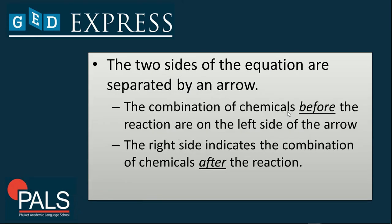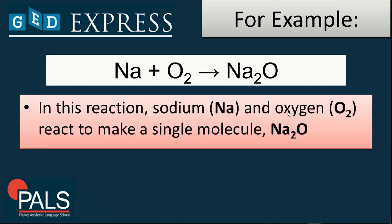The two sides of the equation are separated by an arrow. The combination of chemicals before the reaction are on the left side of the arrow, which is known as the reactant. The right side indicates the combination of chemicals after the reaction, which is known as the product. For example, we have sodium and oxygen, which yields or produces sodium oxide.